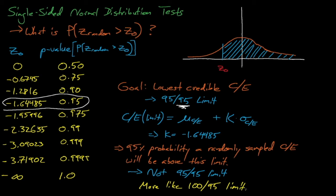In reality, we cannot know the distribution of c over e values for certain, and we must use whatever data points we have available to estimate the normal distribution's mean and variance. No matter how many data points we use to construct the normal distribution of c over e values, there will always be some uncertainty in the distribution's mean and standard deviation.